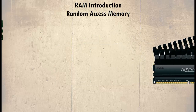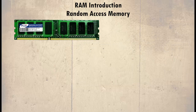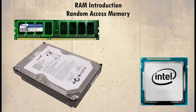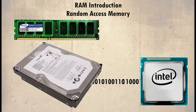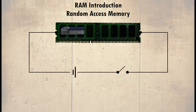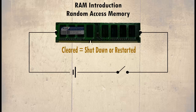RAM is temporary memory where data is stored until it is required almost instantly, unlike data stored on a device like a hard drive where a delay is experienced as it is retrieved. Once the power is removed from RAM, all the data is lost. It is also cleared when the computer shuts down or is restarted.